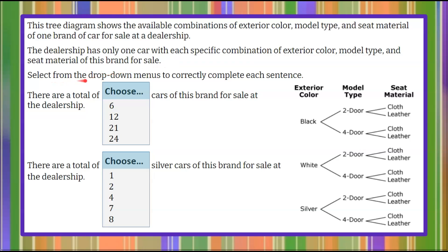We're asked to select from the drop-down menus to correctly complete each sentence. So here are our two drop-down menus. You're not going to interact with it because it's the video. Here's our first question or statement: there are a total of blank cars of this brand for sale at the dealership. And the second statement, there are a total of blank silver cars of this brand for sale at the dealership.